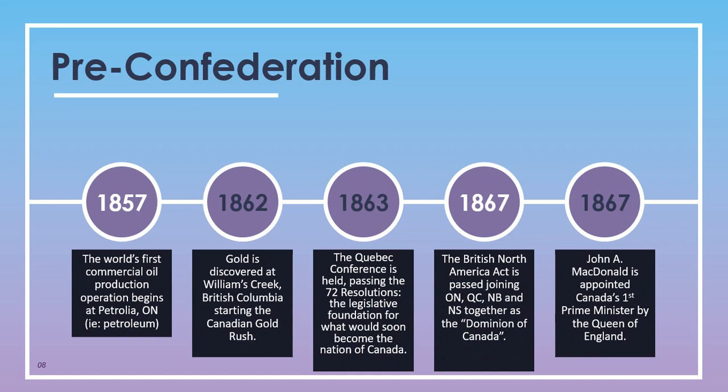Also in 1857, the world's first commercial oil production operation began at Petrolia, Ontario — which is where we get the word petroleum from. There was certainly oil mining and collection in Canada and other parts of the world before this, but this was the very first largely organized business involving strictly extracting oil from the ground. In 1862, gold was discovered at Williams Creek, British Columbia, beginning the Canadian gold rush.